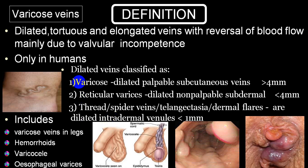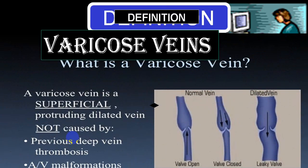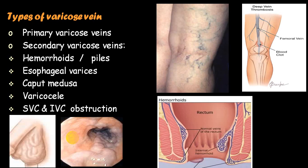We are going to talk mainly about varicose vein in the lower leg, though it can also occur in the upper leg. It is a superficial, protruding, dilated vein not caused by deep vein thrombosis or AV malformation. We can divide varicose vein into primary and secondary. In secondary, we have hemorrhoids, esophageal varices, caput medusa, varicocele, superior vena cava and inferior vena cava obstruction, etc.